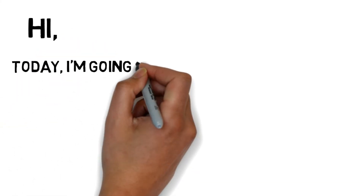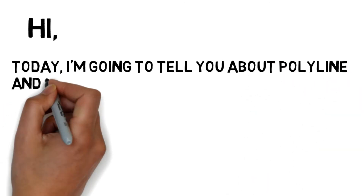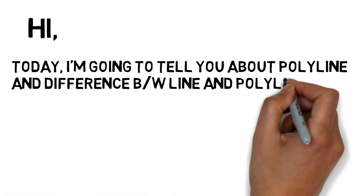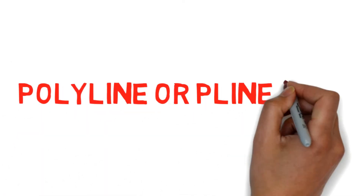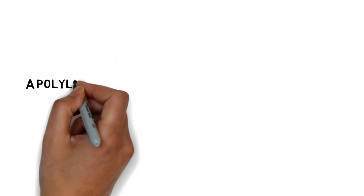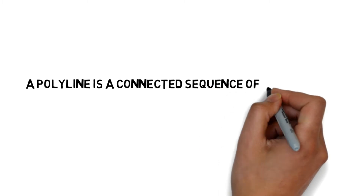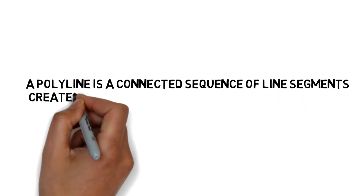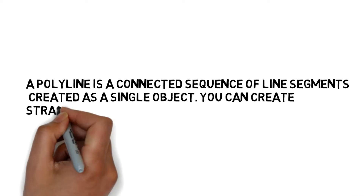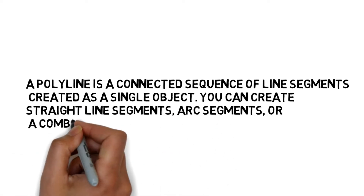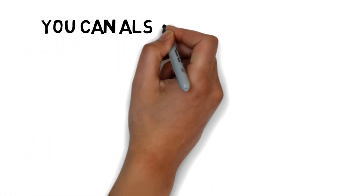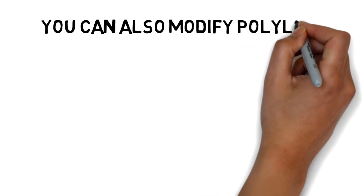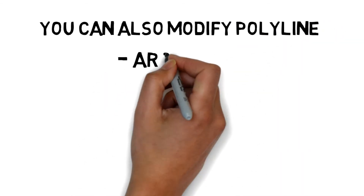Hi everyone, today I am going to tell you about the polyline command and the difference between line and polyline. A polyline, or PLine, short form PL, is a connected sequence of line segments created as a single object. You can create straight line segments, arc segments, or a combination of the two. You can also modify a polyline.